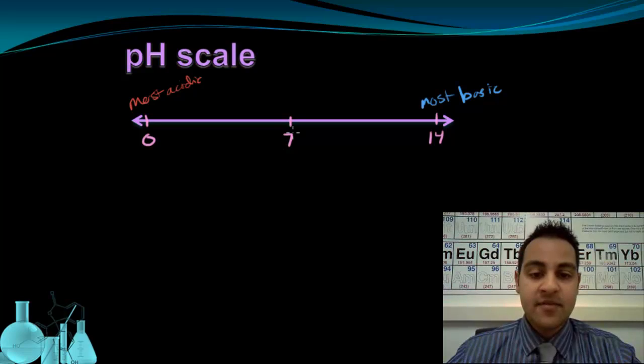So what does that make the middle? If 7 is directly between the most acidic and the most basic, it actually means it's neither one. 7 is going to be neutral. And at 7 we have pure water. Pure water as a substance has a pH of 7. It's neutral.